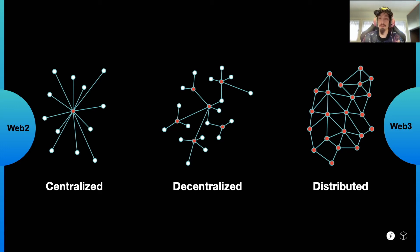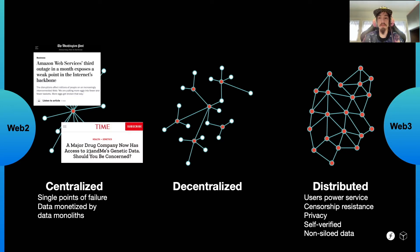Amazon, Google, Fastly — if any of these fail, which they do occasionally, entire services can go down. As you get further and further distributed, though, your service's resilience increases as the users themselves are what are powering the service. So what's the solution? How do we build a web that's distributed? Well, a key part of IPFS and Filecoin is that they're distributed.